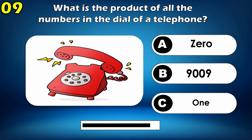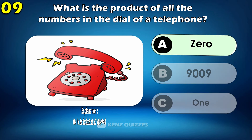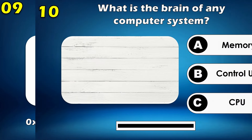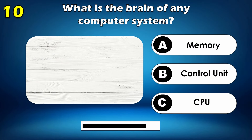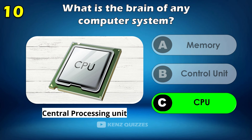What is the product of all the numbers in the dial of a phone? Zero. What is the brain of any computer system? CPU.